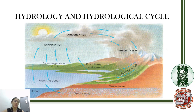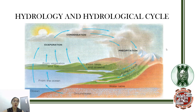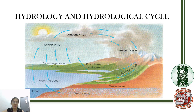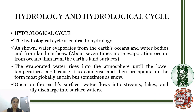This is the hydrological cycle, which you may already know from elementary school. Water from the ocean, rivers, lakes, soil, and vegetation will evaporate to the atmosphere. In the atmosphere, it will undergo condensation, where vapor becomes liquid form. When clouds become heavy enough, that is when precipitation occurs. That is the simple hydrological cycle.